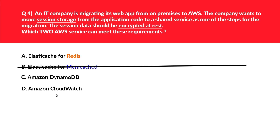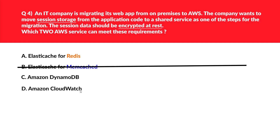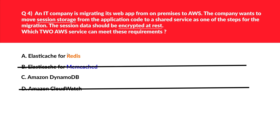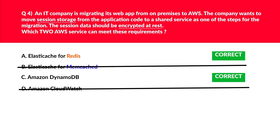Option D says Amazon CloudWatch. CloudWatch cannot encrypt data at rest, and moreover CloudWatch is not a storage service that can store session data during migration — it's a monitoring service. So this is an incorrect choice. Quick tip for the exam: whenever you see options containing ElastiCache for Memcached and ElastiCache for Redis, the chances of ElastiCache for Redis being the correct answer are very high. If confused, always choose Redis. Memcached supports encryption in transit but not encryption at rest. Hence we'll lock A and C as the correct answers.